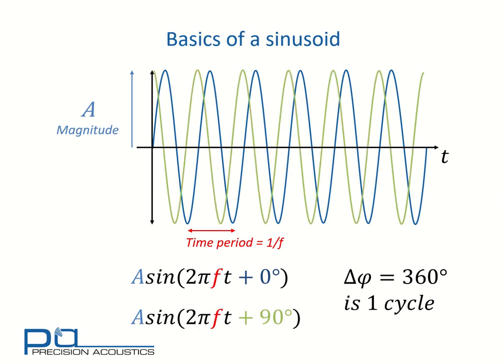If, however, we phase shift by 90 degrees, we can see the new green cosinusoid signal shown on the graph.